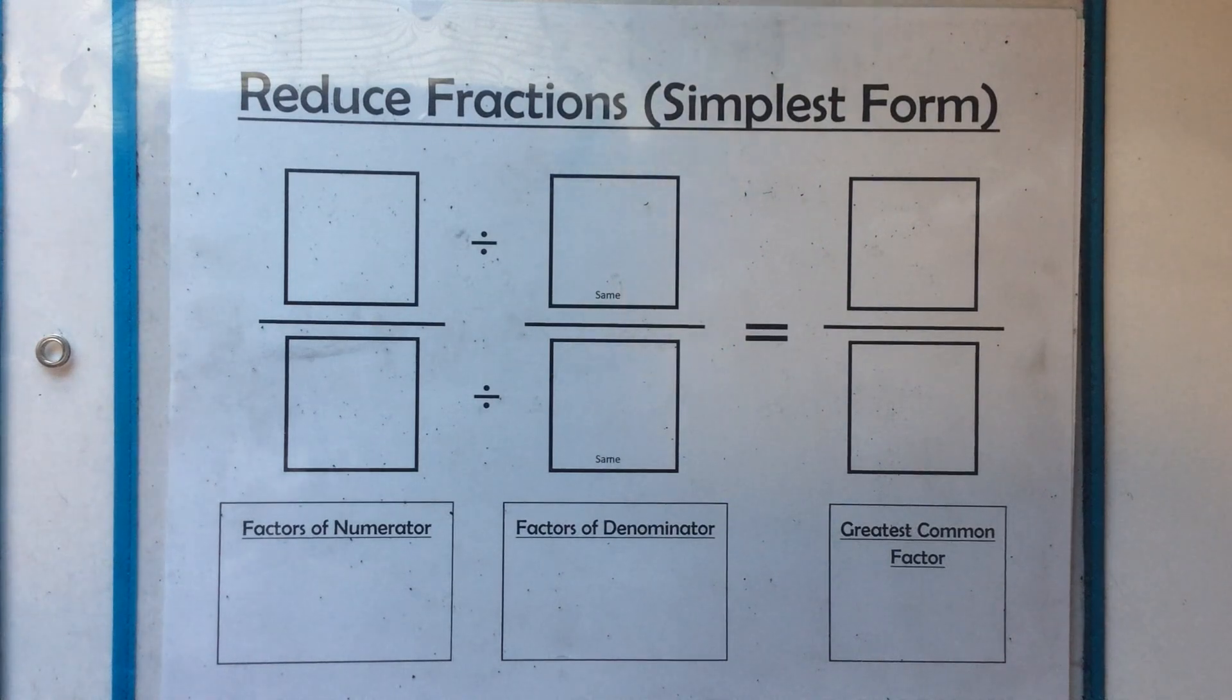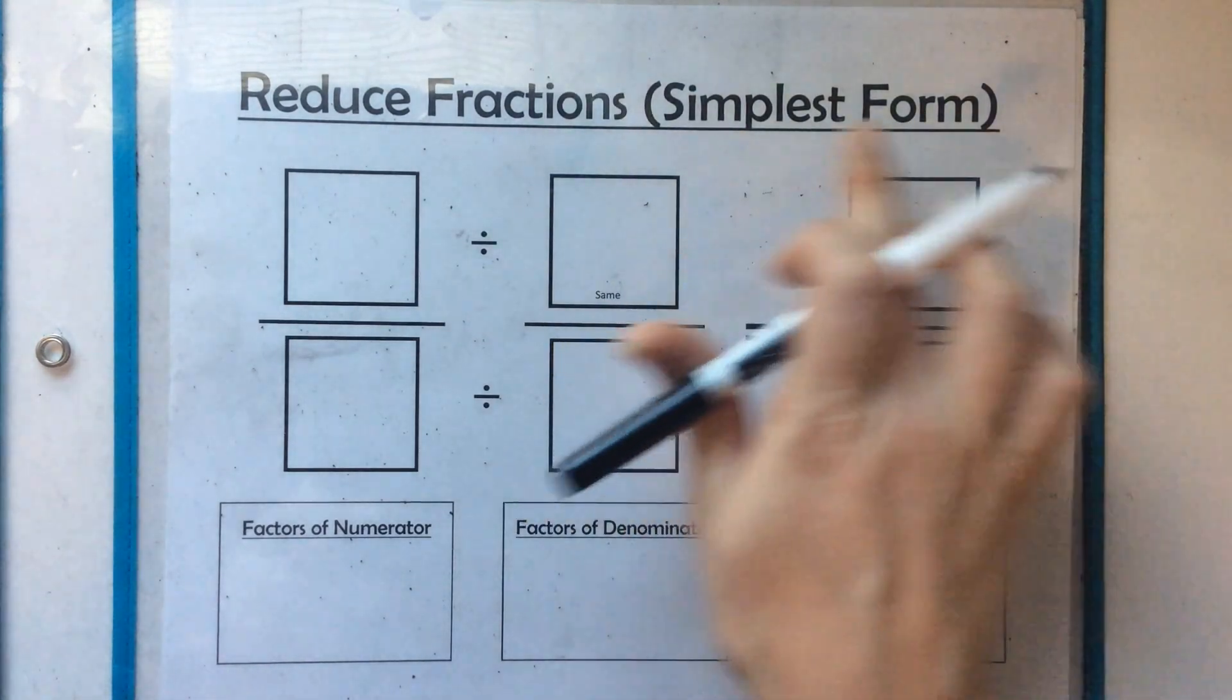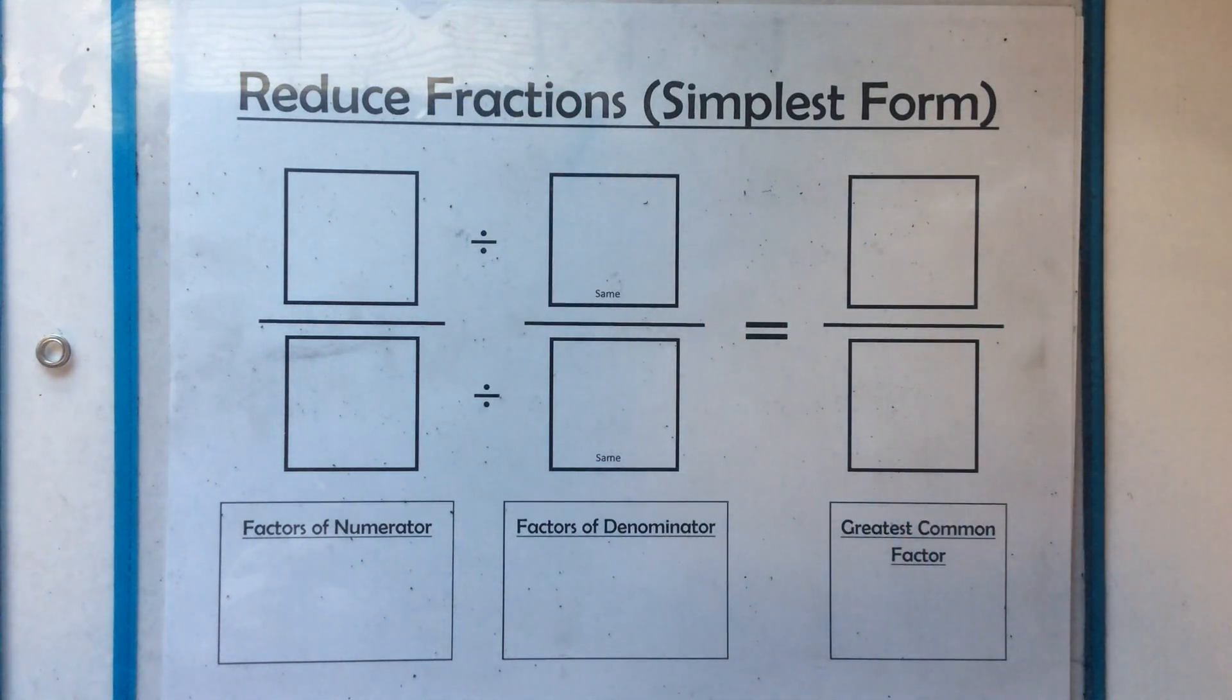All right, let's talk about reducing fractions, or getting fractions into its simplest form. Simplest form means the smallest numbers you can possibly make that fraction, but still keeping it as an equivalent fraction.